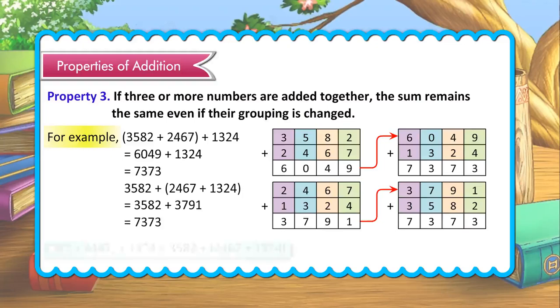3582 plus 2467 plus 1324 equal to 3582 plus 2467 plus 1324.